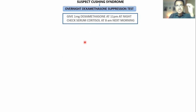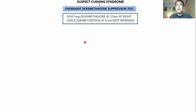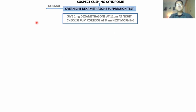The expectation is that when you give cortisol from outside, that exogenous cortisol will suppress cortisol synthesis in the body and cortisol levels will go down. If cortisol levels the next morning are suppressed, it means that is normal. The test excludes Cushing syndrome — it is a sensitive test.